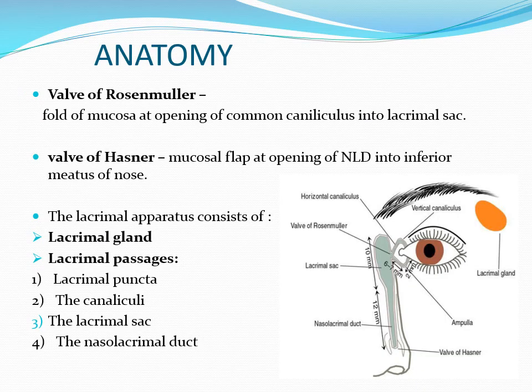Basically, coming to the anatomy of the lacrimal apparatus, it consists of a lacrimal gland and the lacrimal passages. The lacrimal passages include the lacrimal puncta in the upper and lower lid, then there are the canaliculi, then there is a lacrimal sac, and then there is the nasolacrimal duct.